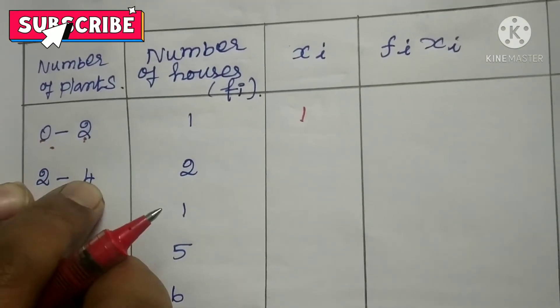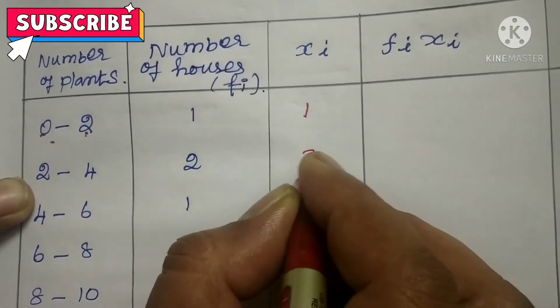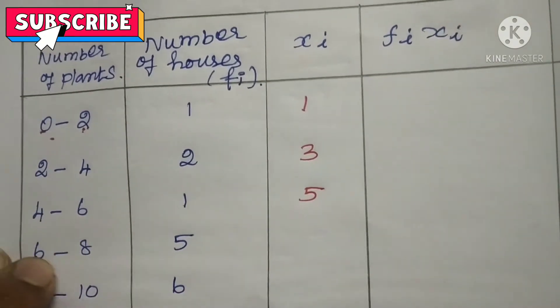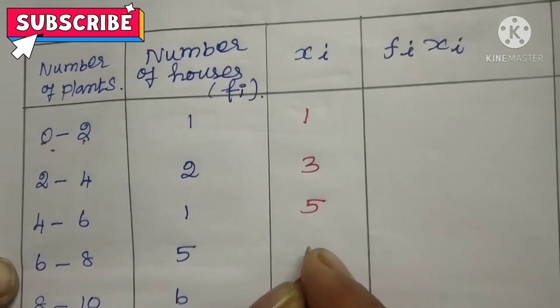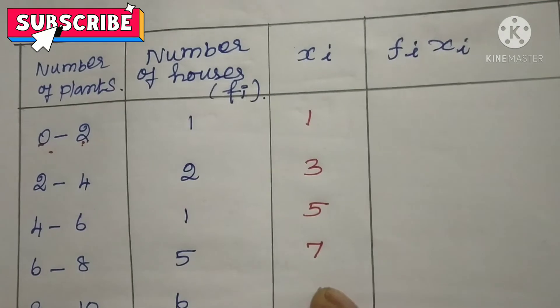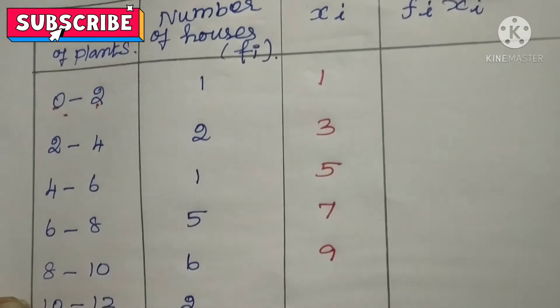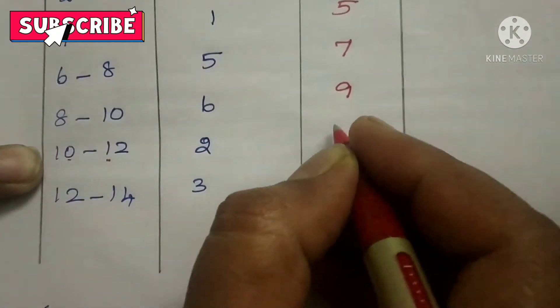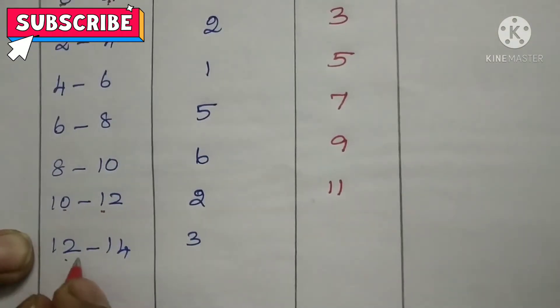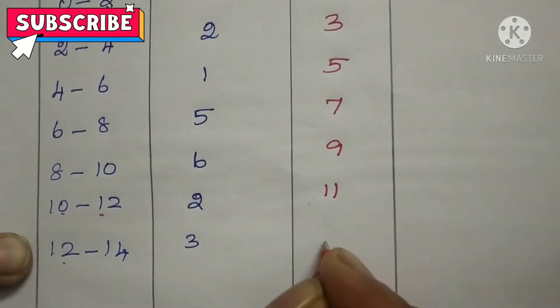Then 2 plus 4, 6. 6 divided by 2 is 3. Then 4 plus 6, 10. 10 divided by 2 is 5. Then 6 plus 8, 14. 14 divided by 2 is 7. Then 8 plus 10, 18. 18 divided by 2 is 9. Then 10 plus 12, 22 divided by 2 is 11. Then 12 plus 14, that is 26. 26 divided by 2 is 13.